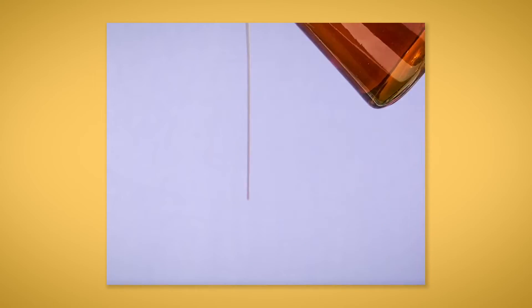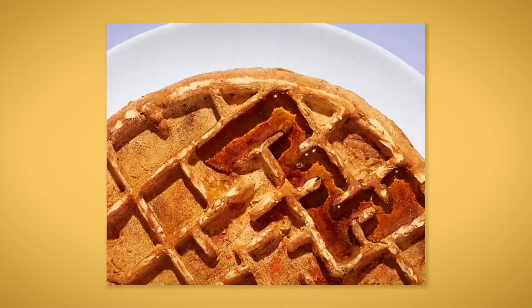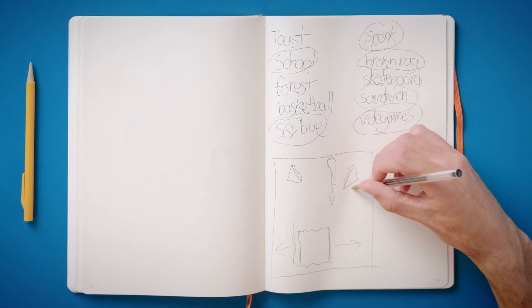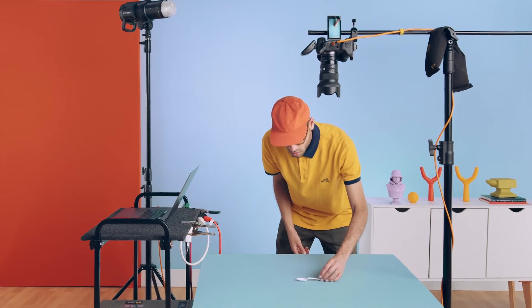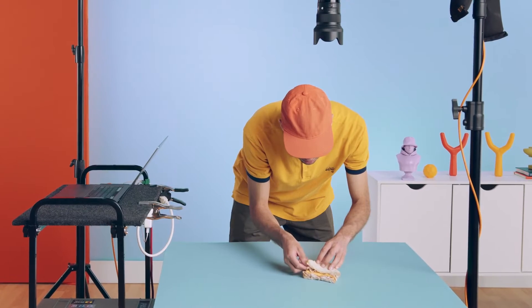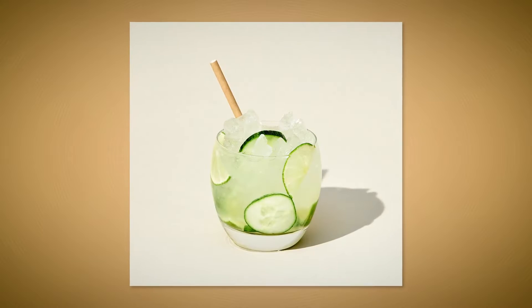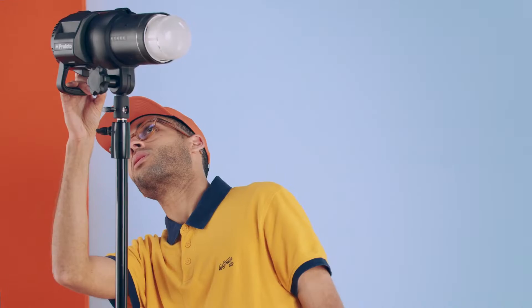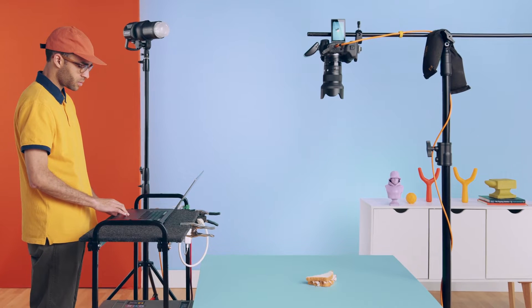To get started, I'll explain the difference between post animation and stop motion, then I'll tell you how to develop a concept and sketch it out. We'll prepare a photo shoot, choosing the props and background that are necessary to execute your idea. After that, we'll look at how to light your scene and set up your camera to shoot individual pieces.